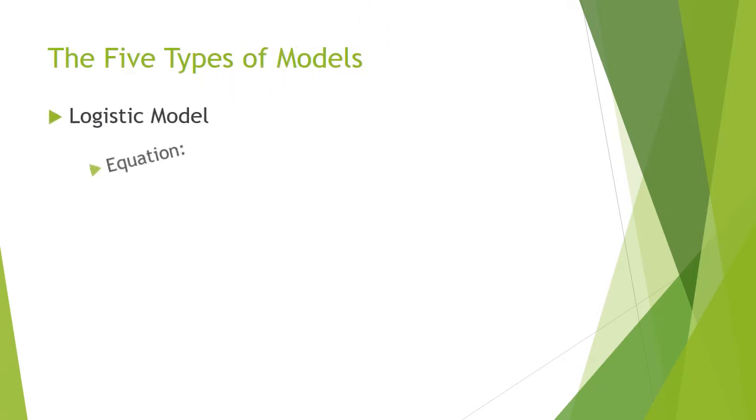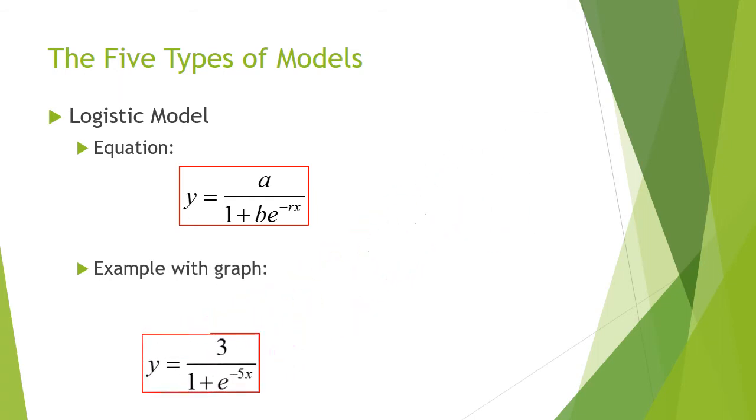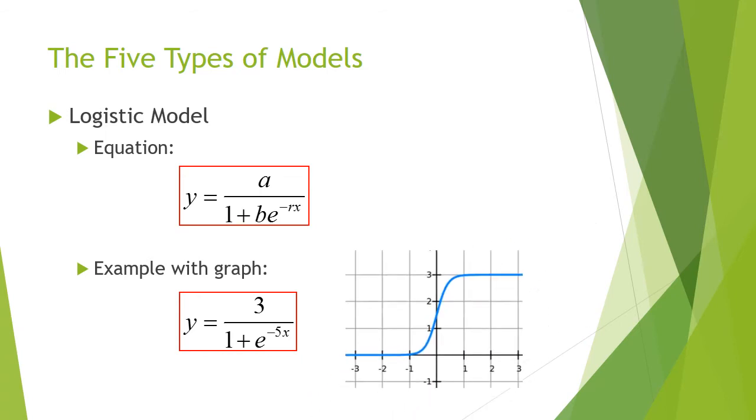We also have the logistic model. The equation looks something like this: y equals a over 1 plus b times e to the negative rx. An example would be y equals 3 over 1 plus e to the negative 5x, and here's what the graph would look like.